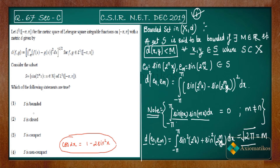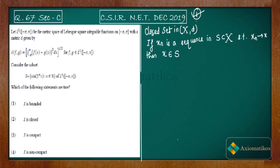Now let us talk about closedness. A set S is said to be closed inside metric space X if every sequence which is convergent in S has its limit inside S. That is, if xₙ is a sequence in S and xₙ converges, then the limit point must belong to S. This is the definition of a closed set in metric space (X, D).